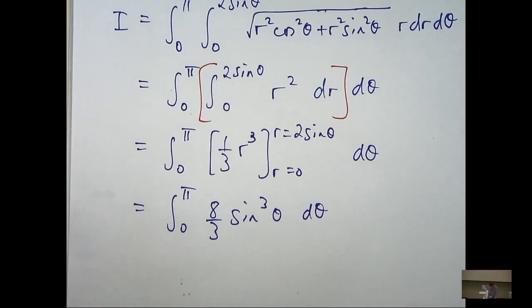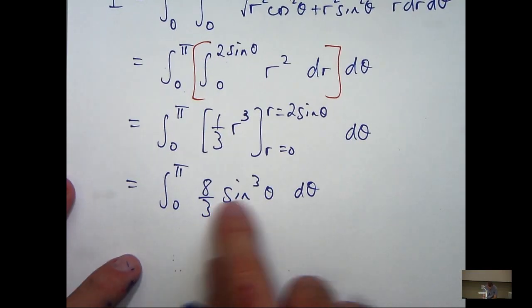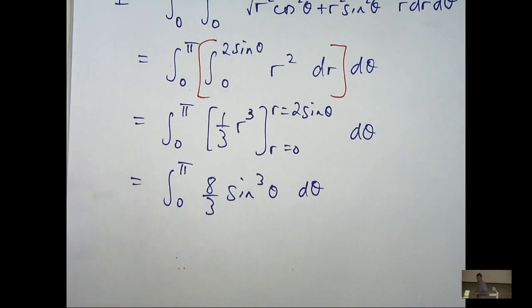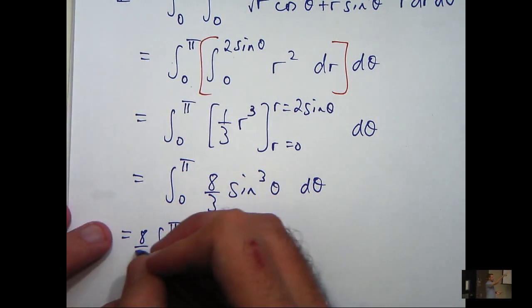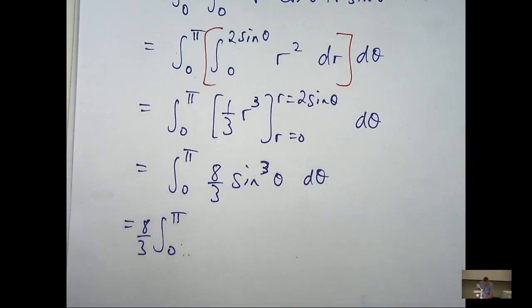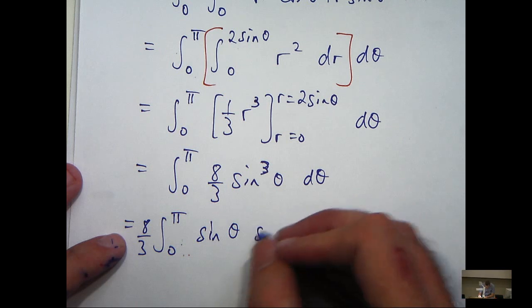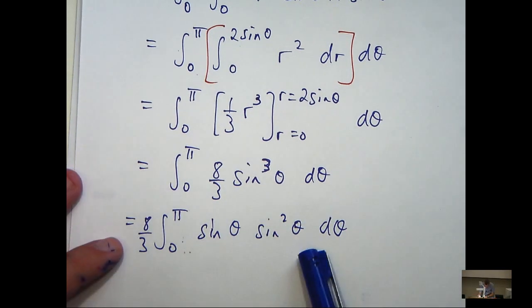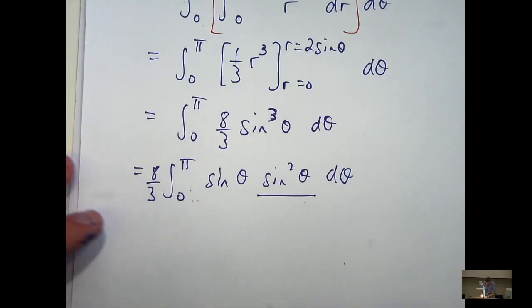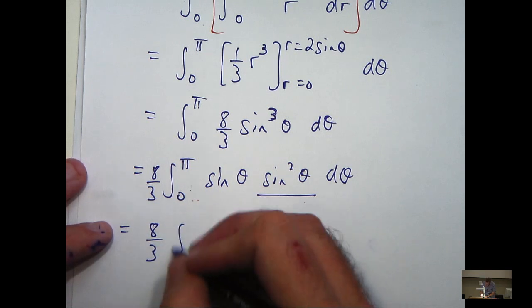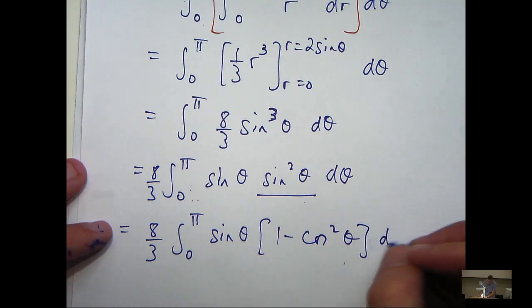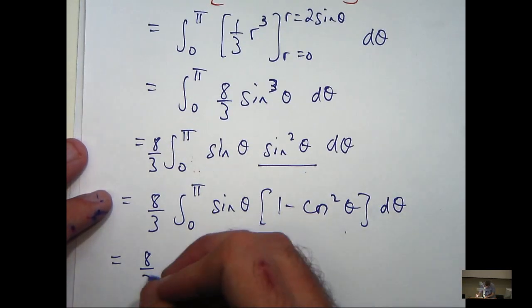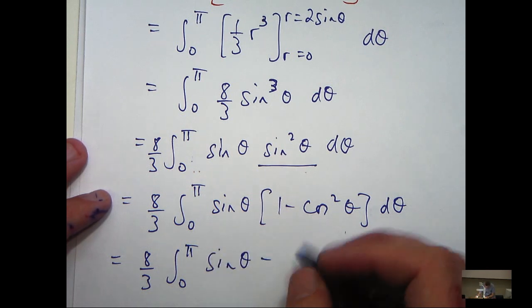So now I have a single integral and I've got a power of a trig function to integrate. So essentially, I'm going to have to break this sin cubed theta up into another combination involving sin and cos, and then integrate. Now, hopefully you would have seen this technique in first year, but if not, you can see it now. So this sin squared theta will then be replaced with 1 minus cos squared theta. This is all going to aid our integration.